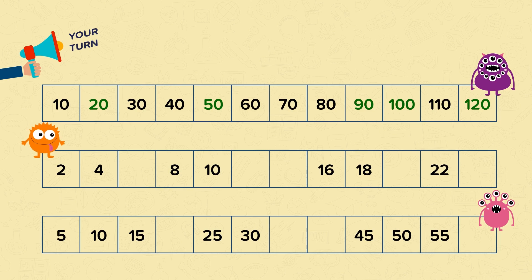For the next number track you had to count in 2s. Well done if you knew that the missing numbers were 6, 12, 14, 20 and 24.